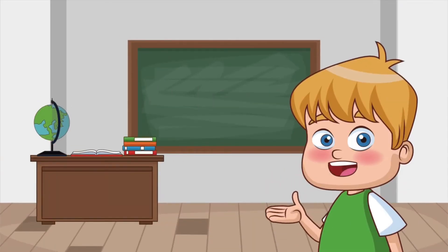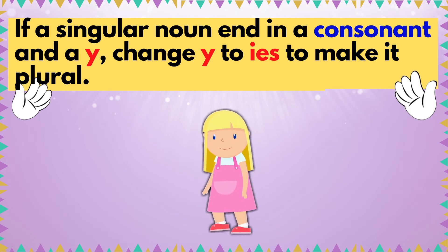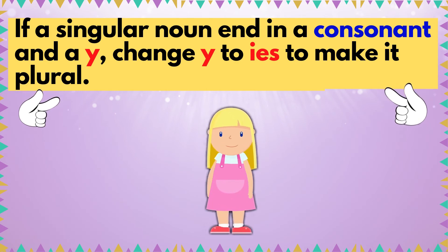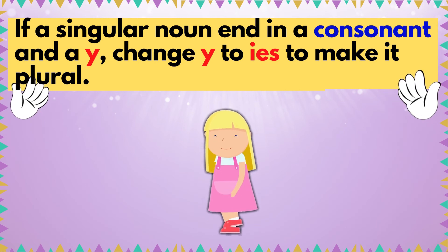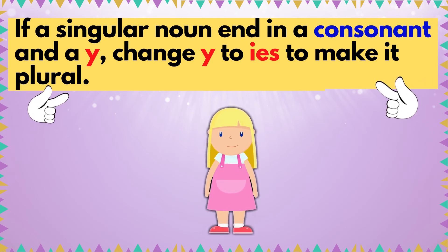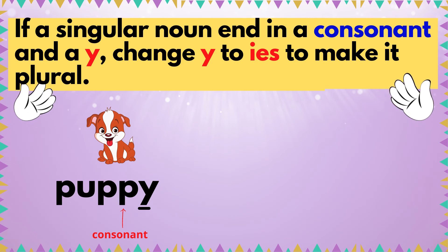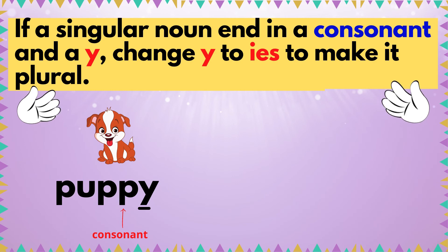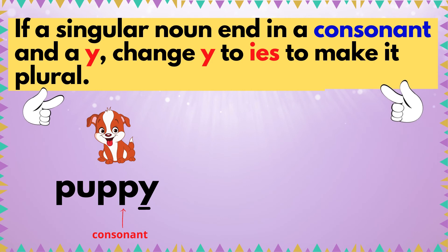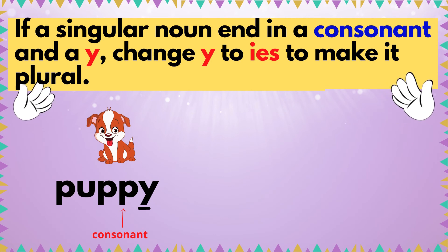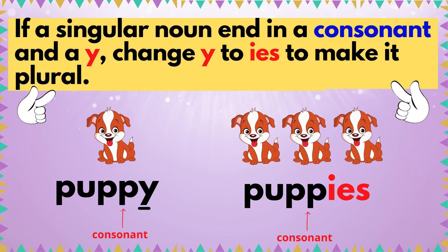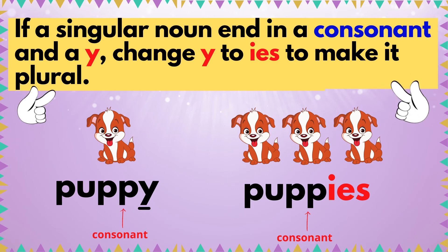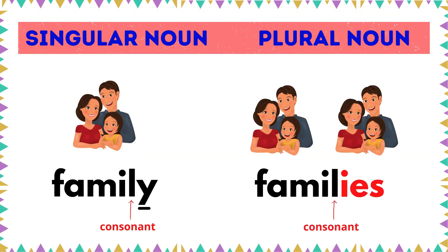Rule number six: if a singular noun ends in a consonant and Y, change Y into IES to make it plural. Say hi to my puppy. Take a look at the word puppy — it ends in two consonant letters, P followed by letter Y. We have to remove the letter Y and change it into IES, so puppy becomes puppies. Family becomes families.